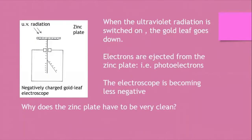Let's look at this gold leaf electroscope. The vertical stem is attached to a cap, and there's a gold leaf which can move up and down, and which at the moment is at a bit of an angle. The gold leaf electroscope is negatively charged, meaning there are lots of electrons everywhere. That's the reason why the gold leaf rises — the negative electrons on the leaf are repelled by the negative electrons at the bottom of the stem.